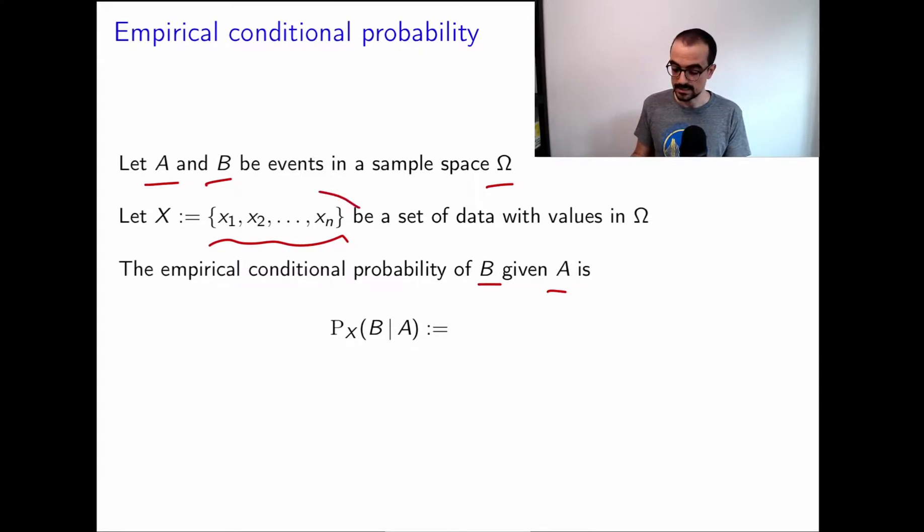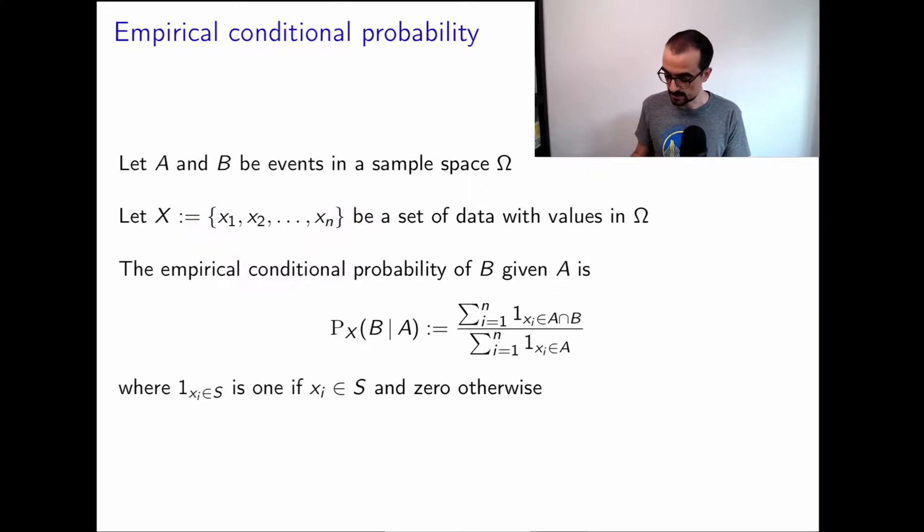So in order to compute the empirical conditional probability of an event given another event, let's say that we have A and B in a certain sample space omega, and we have a set of data. Now we want to compute the empirical conditional probability of B given A. We're going to just apply the same intuition. What we're going to say is, let me take a look at this data set. How many of these guys are in A? That's the number I'm going to divide by. Out of those, how many are also in B? In other words, how many of them are in the intersection between A and B? And that's it.